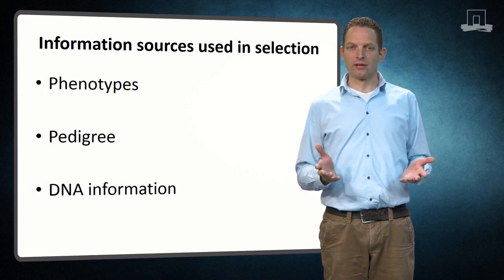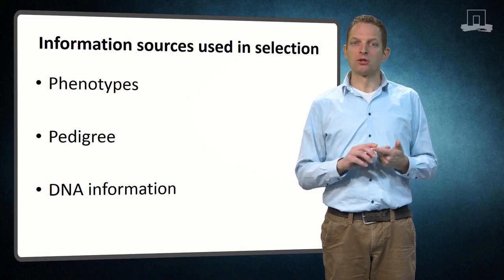Several different information sources can be used for selection. As we will discuss during this lecture, the main sources are phenotypes, pedigree, and DNA information.